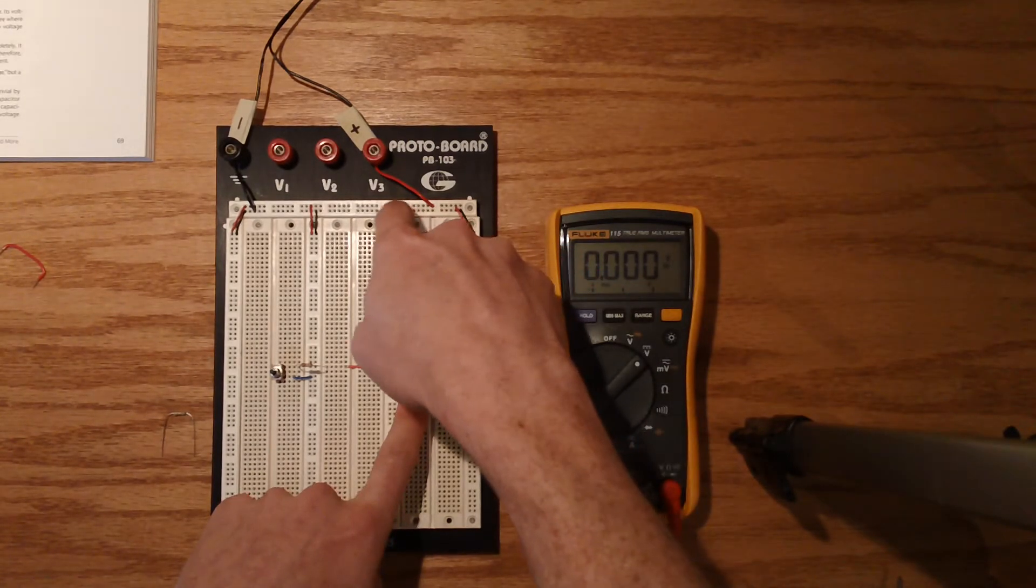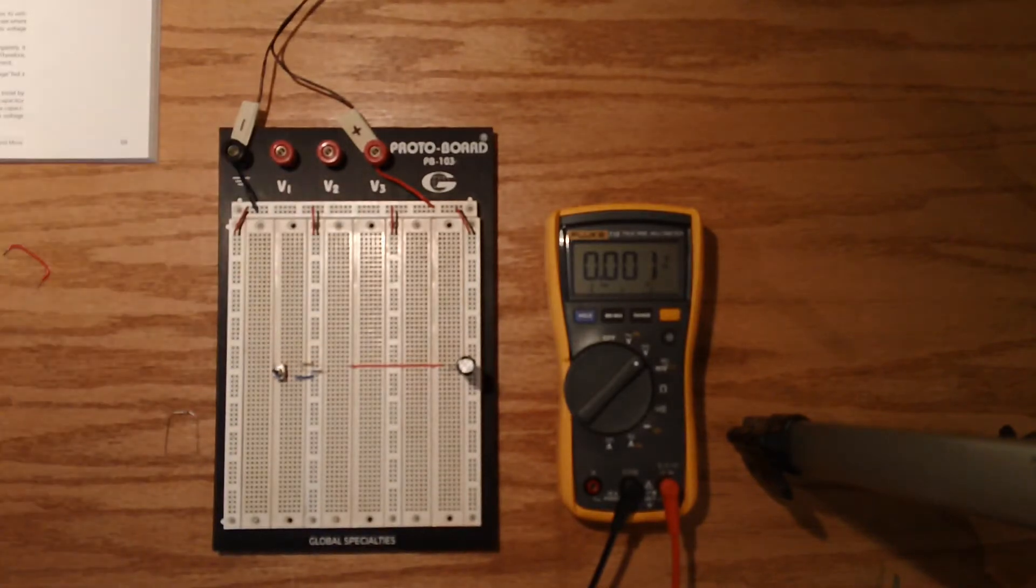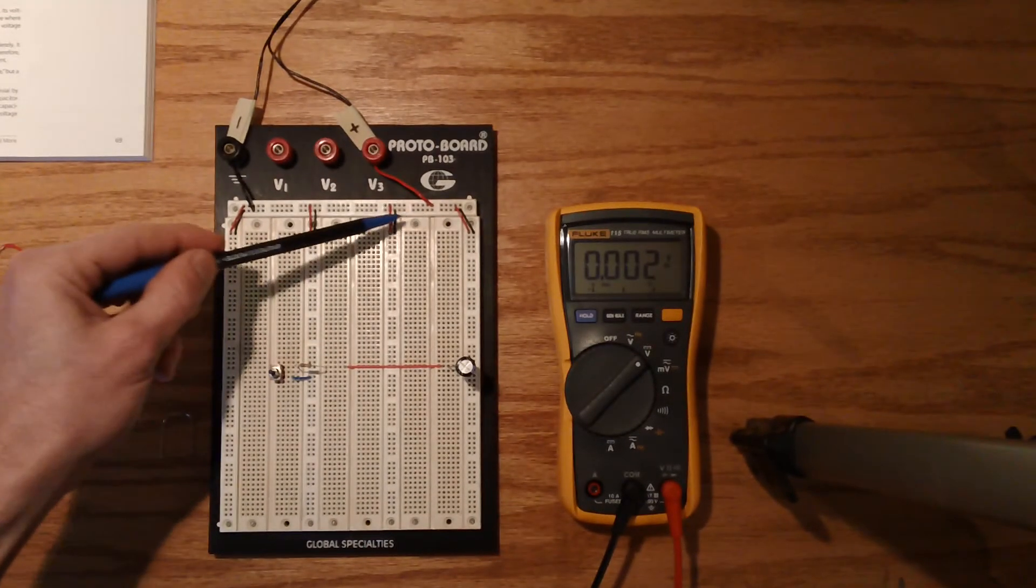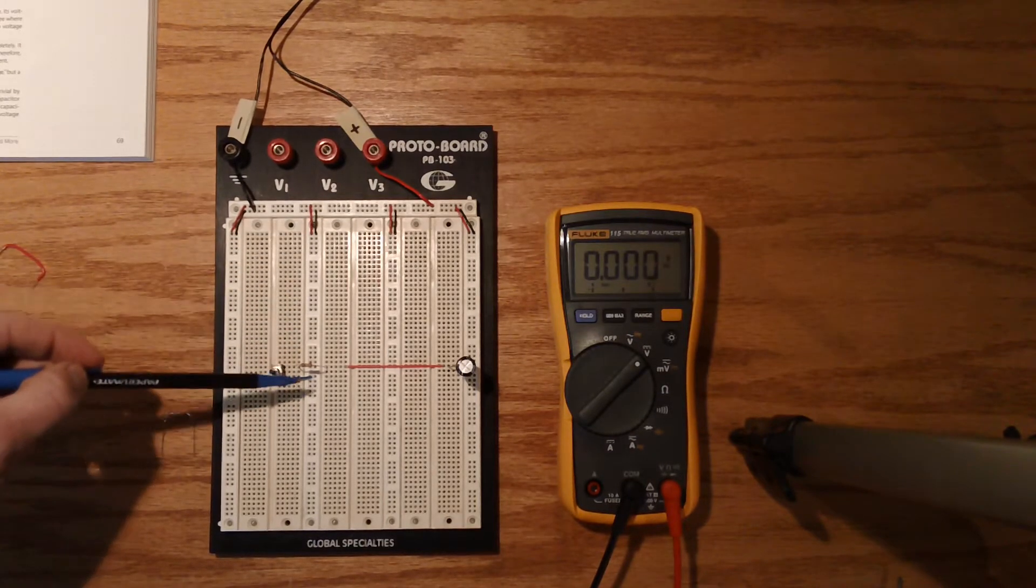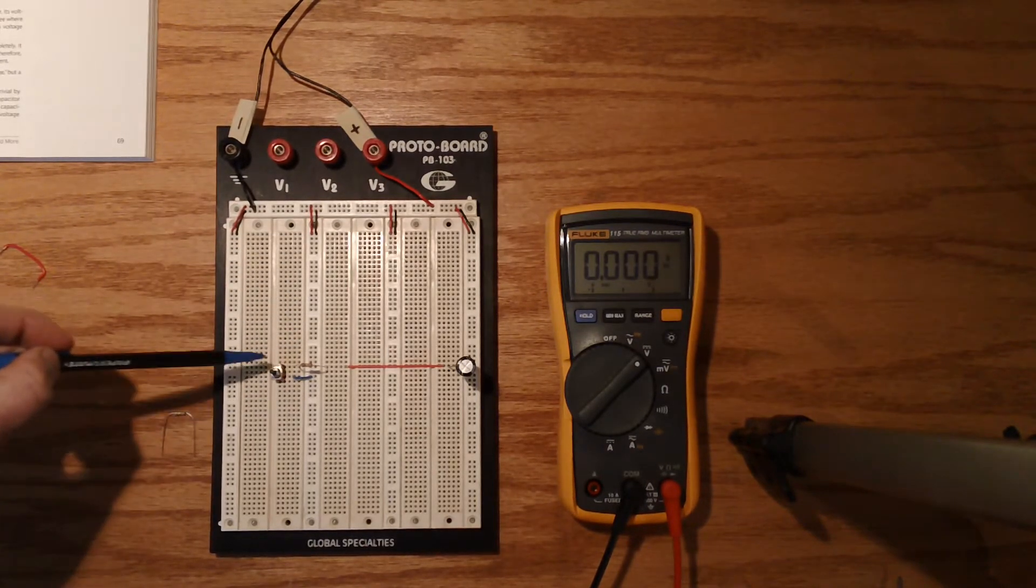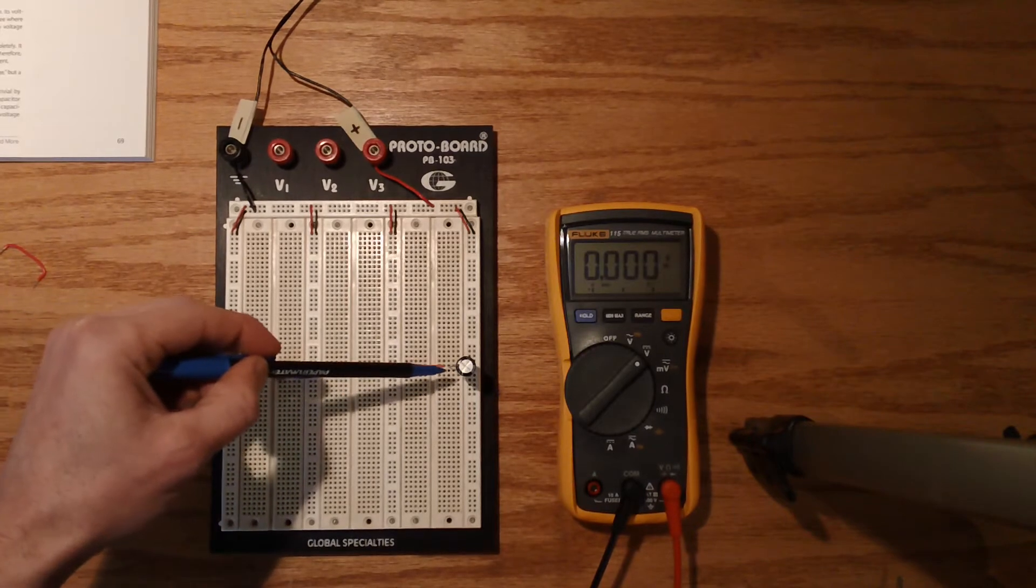And it would travel all the way back down this power bus line between the positive side through the switch, through the resistor into this lead of the capacitor.